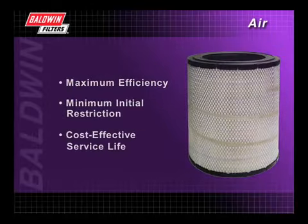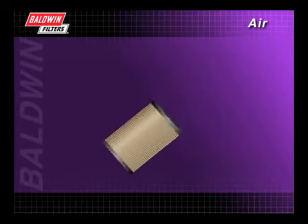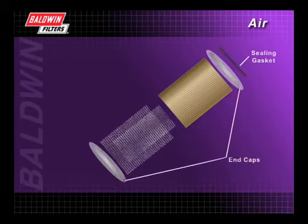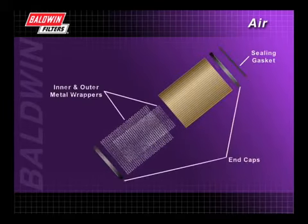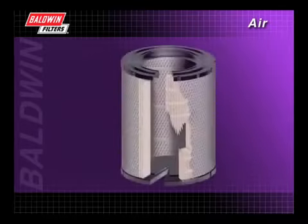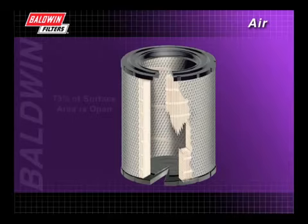The primary components of a typical heavy-duty filter are the sealing gasket, the end caps or molded ends, the inner and outer metal wrappers, and the media. The inner and outer metal wrappers protect the filter media and provide structural strength for the completed filter.